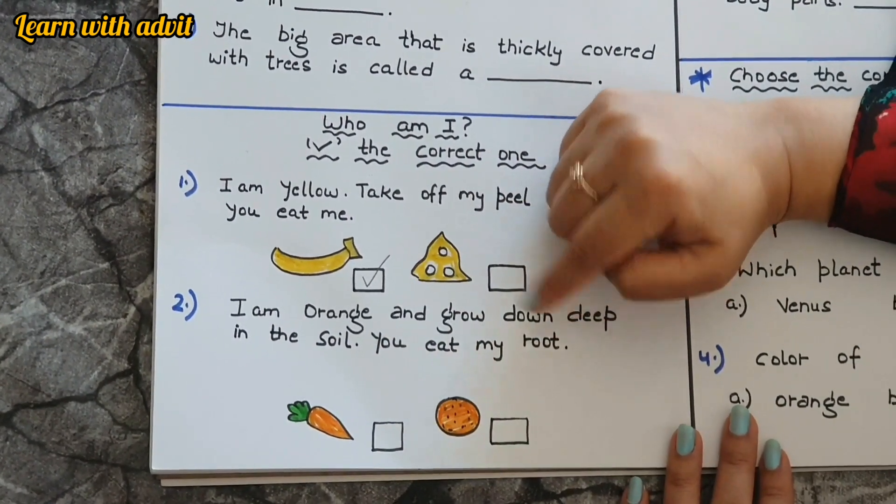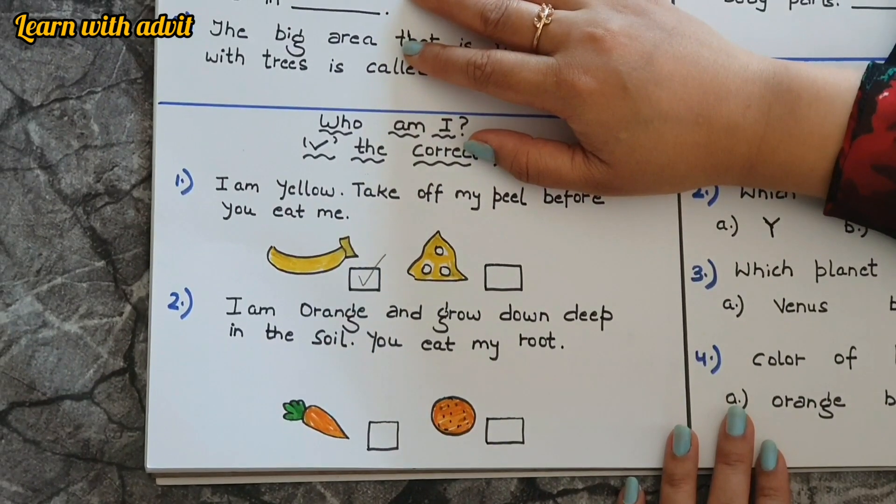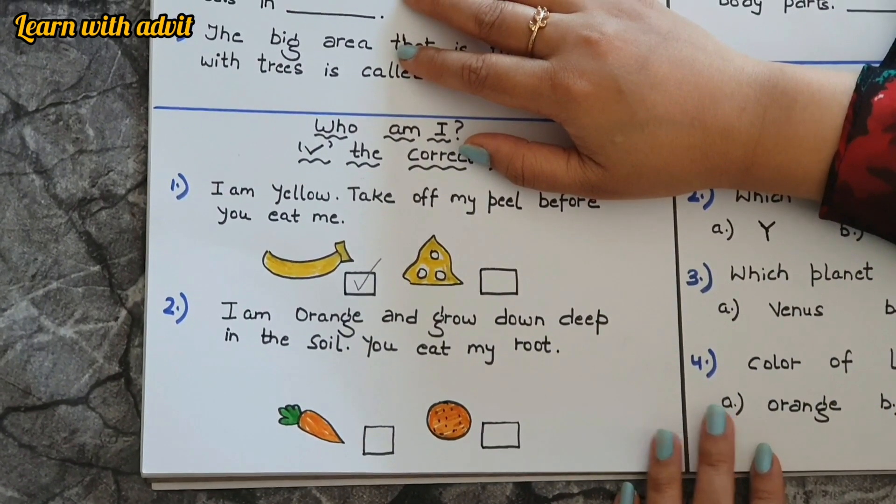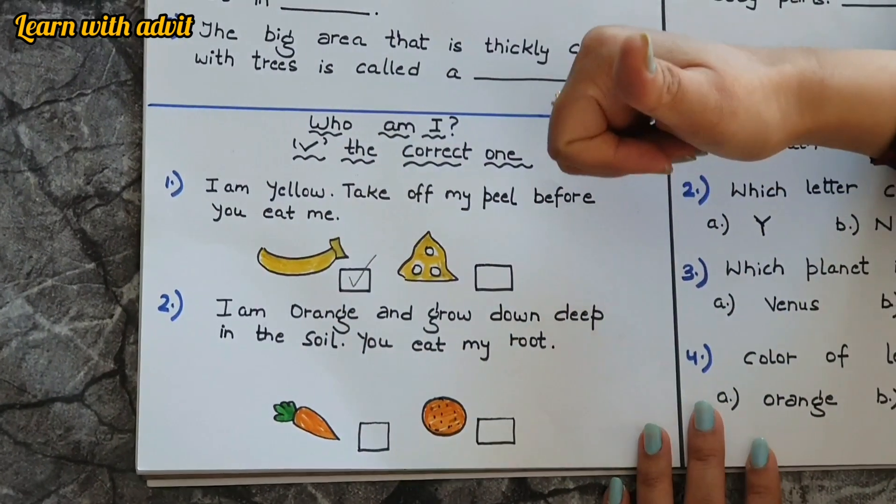Next one is I am orange and grow down deep in the soil, you eat my root. So which one? Carrot. This one, because it grows underground, it's a root vegetable. Very good.